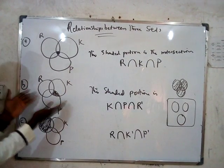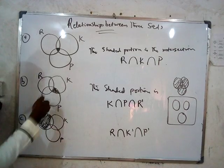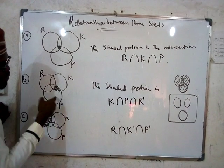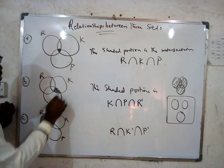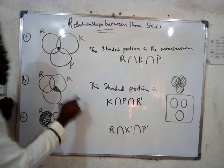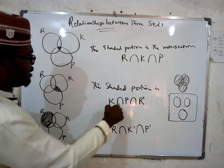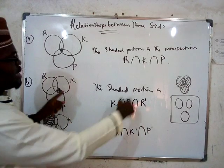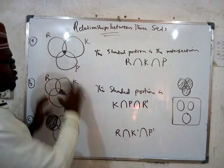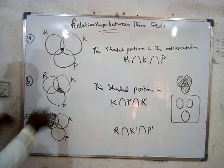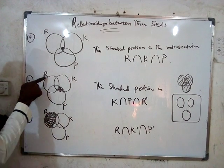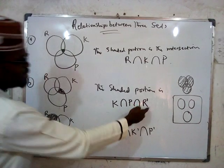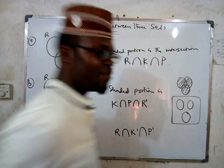Now look at this set — which of the sets are joining in the shaded portion here? K and P. So the shaded portion is where K and P have the same elements, and it is represented as K intersection P. But notice that everything here is not inside R, so we write it as K intersection P intersection R prime. Because everything in this region is not inside R, that's why we use R prime.